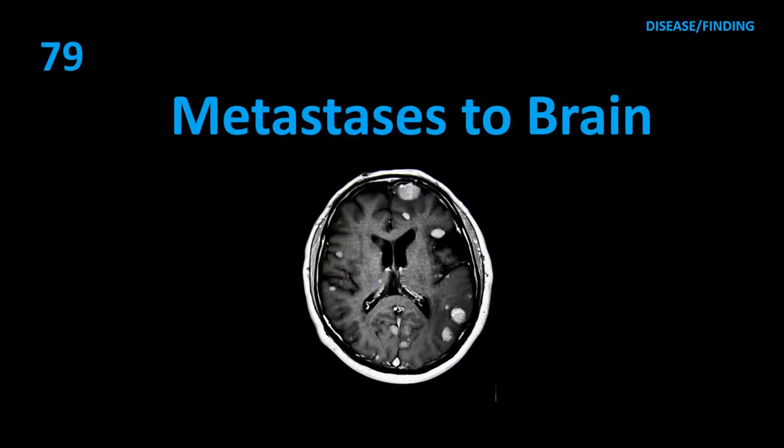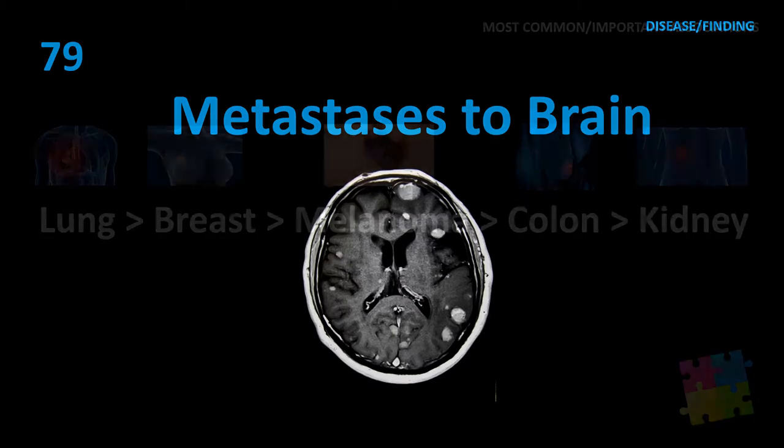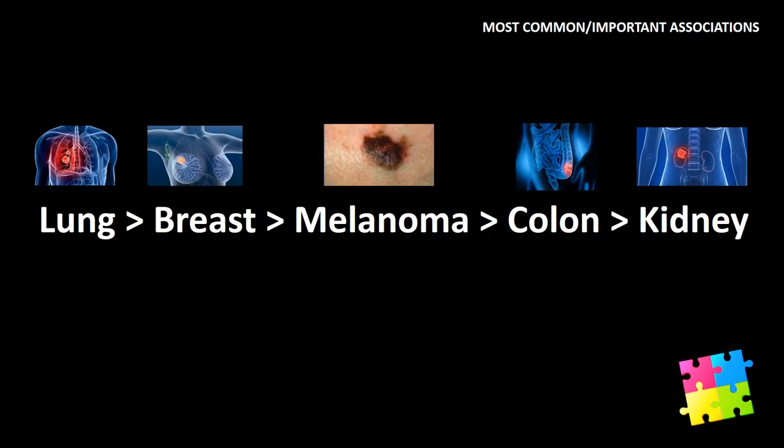Item 79: Metastases to brain — lung most often, then breast, then melanoma, then colon, then kidney.